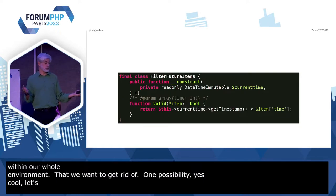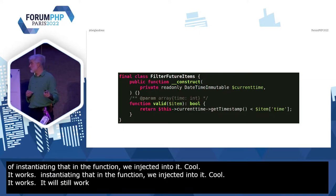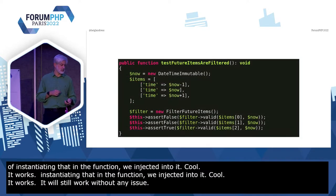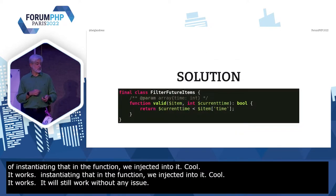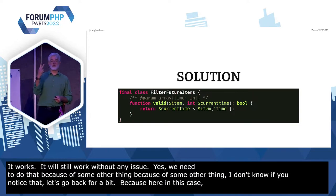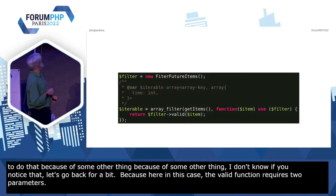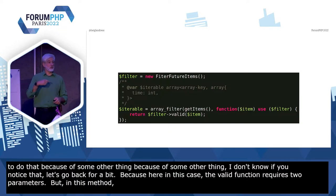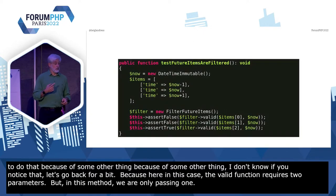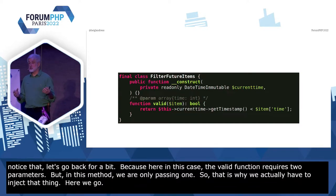It will still work without any issue. We need to do that because of another thing. Because here the `validate` function requires two parameters, but in this method we're only passing one. So that's why we have to actually inject that thing. So now we are injecting that time, and we can call the `validate` function with our one parameter.